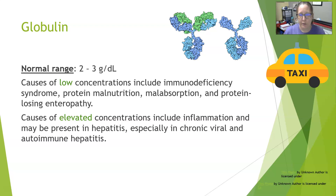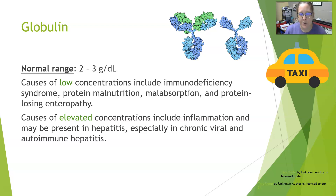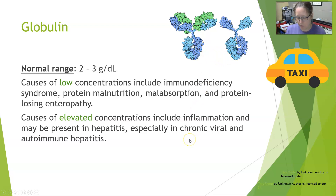Causes of low globulin concentrations include immunodeficiency syndrome — not producing enough antibodies — protein malnutrition, malabsorption (problems absorbing amino acids so proteins can be made, leading to GI symptoms), and protein-losing enteropathy, where protein is lost through the GI system. Causes of elevated concentration include inflammation and hepatitis, especially chronic viral and autoimmune hepatitis, because of an increased amount of antibodies. Anything that ups antibody production can raise your globulin reading.